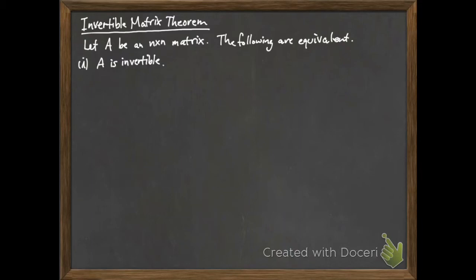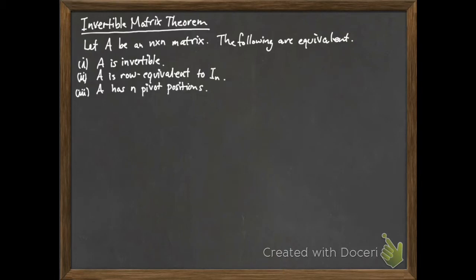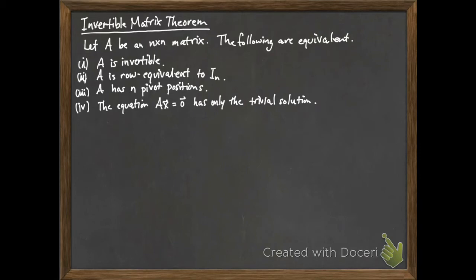The first statement is that the matrix A is invertible. Next, A is row equivalent to the n by n identity matrix. Next, A has n pivot positions. Four, the matrix equation AX equals zero has only the trivial solution. Five, the columns of the matrix A form a linearly independent set.